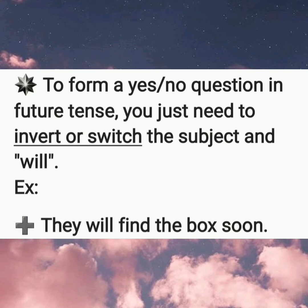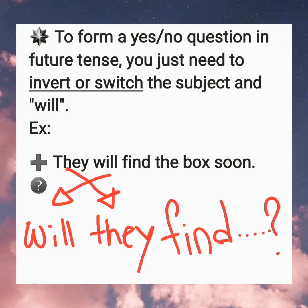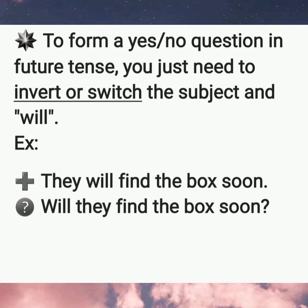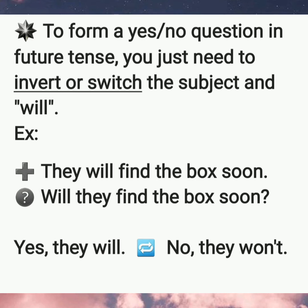To form a yes or no question in future tense, you just need to invert or switch the subject and 'will.' For example: 'They will find the book soon.' You just need to switch 'will' and 'they,' and the question will be: 'Will they find the book soon?' The answer: yes, they will. No, they won't. Won't means will not.